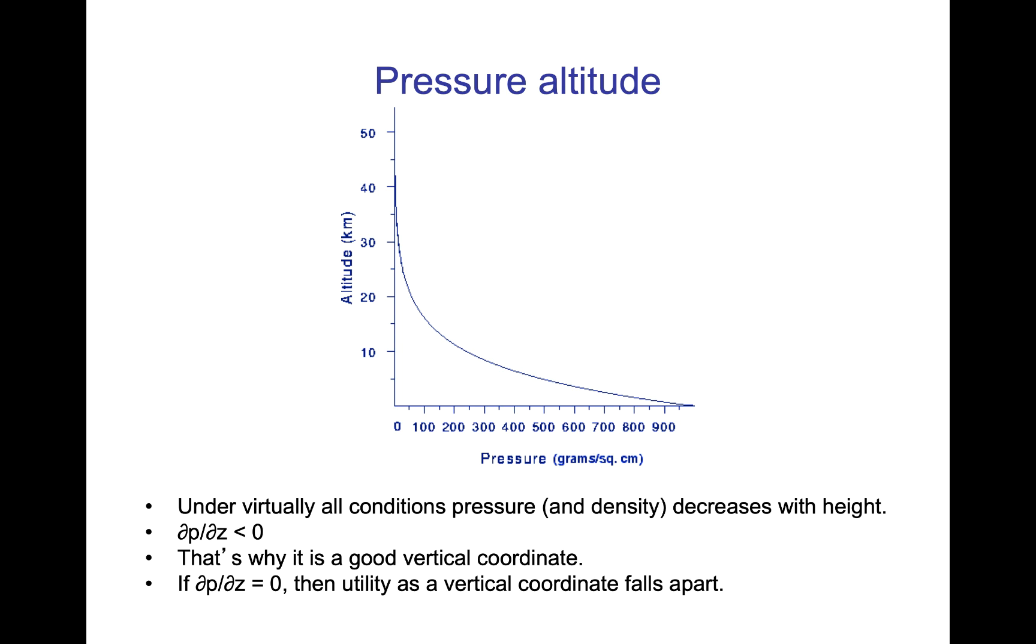That is, a negative finite difference in pressure will be of the opposite sign of a finite difference in height. This relationship is why pressure might be a good vertical coordinate. If dp dz goes to 0, then the utility as a vertical coordinate falls apart because you lose a monotonic relationship. It could become multivalued.